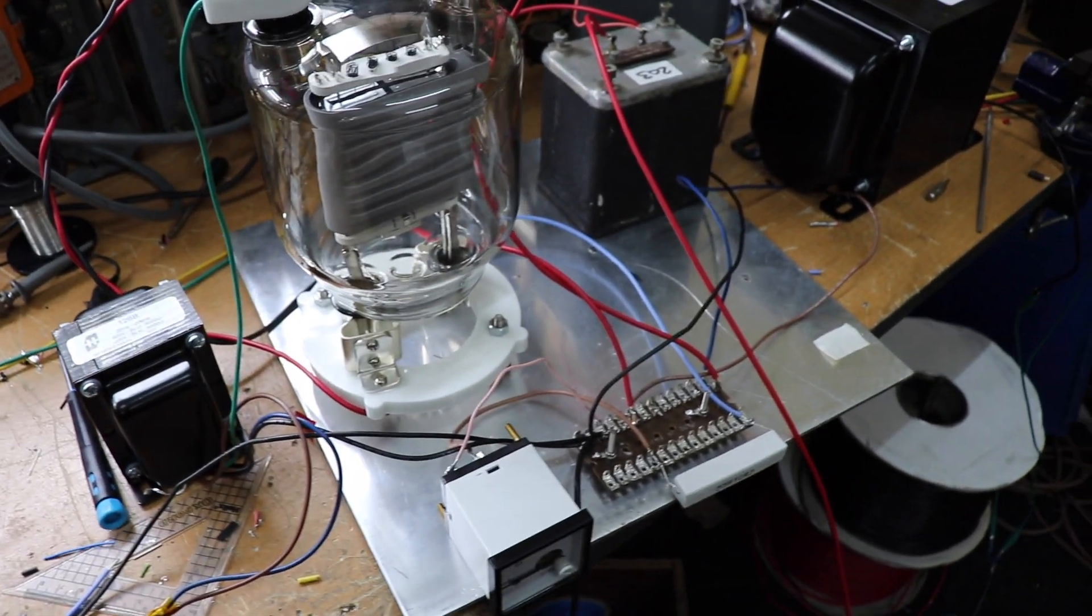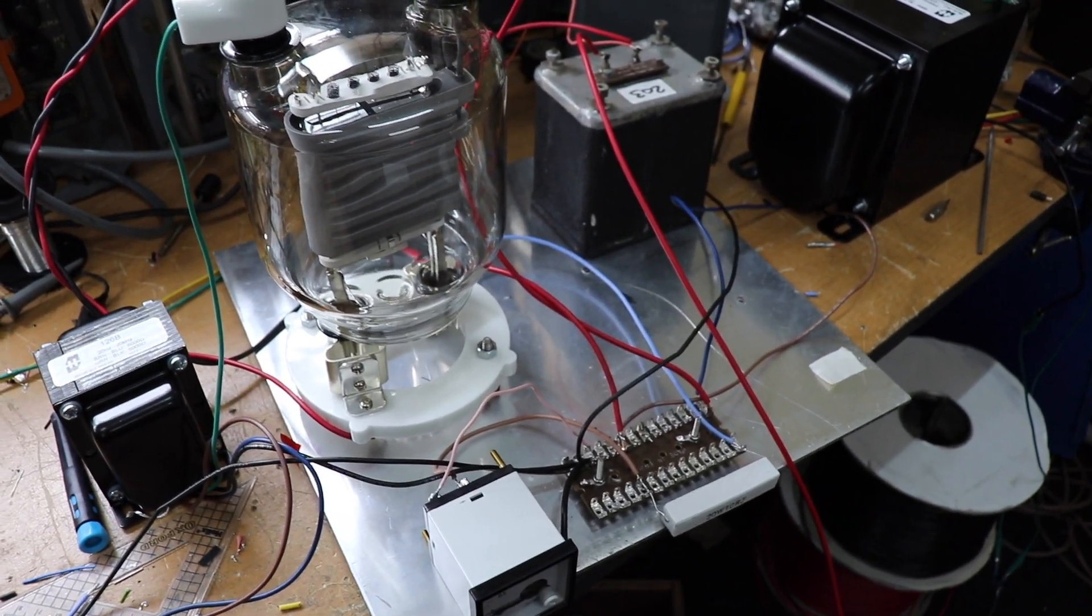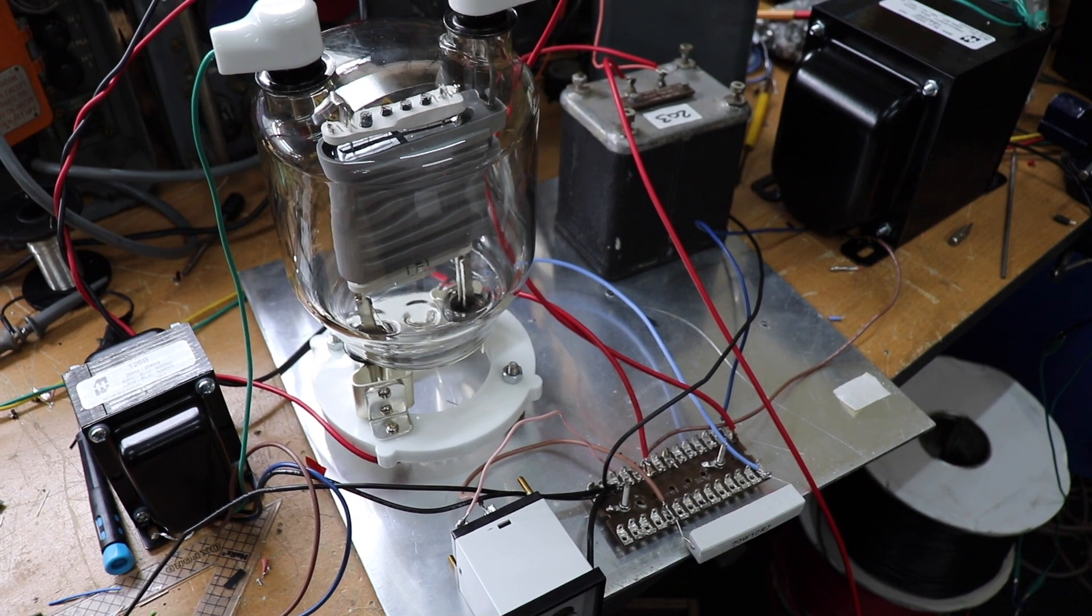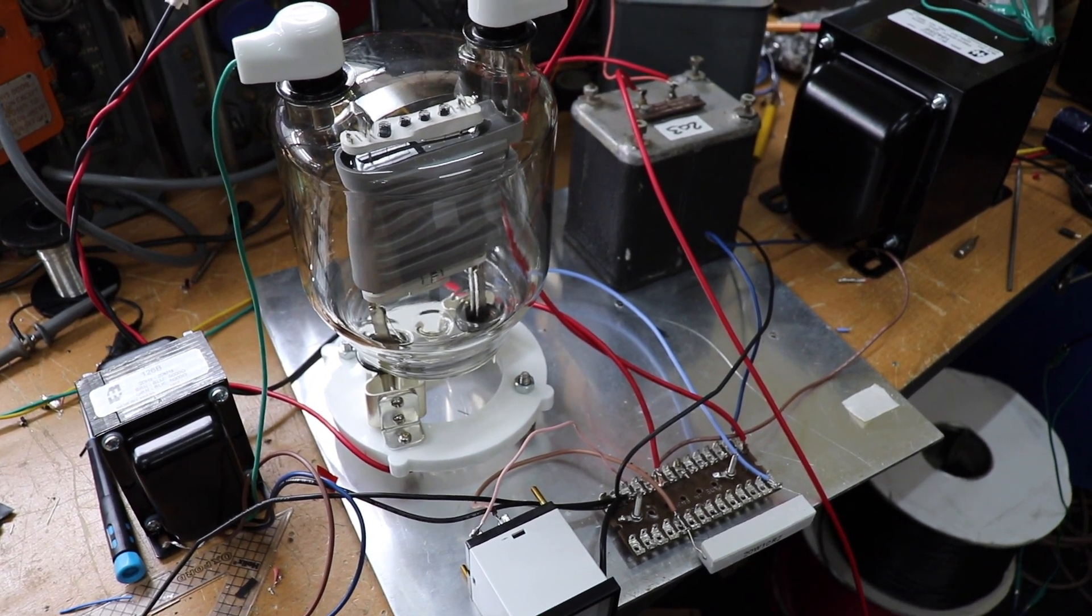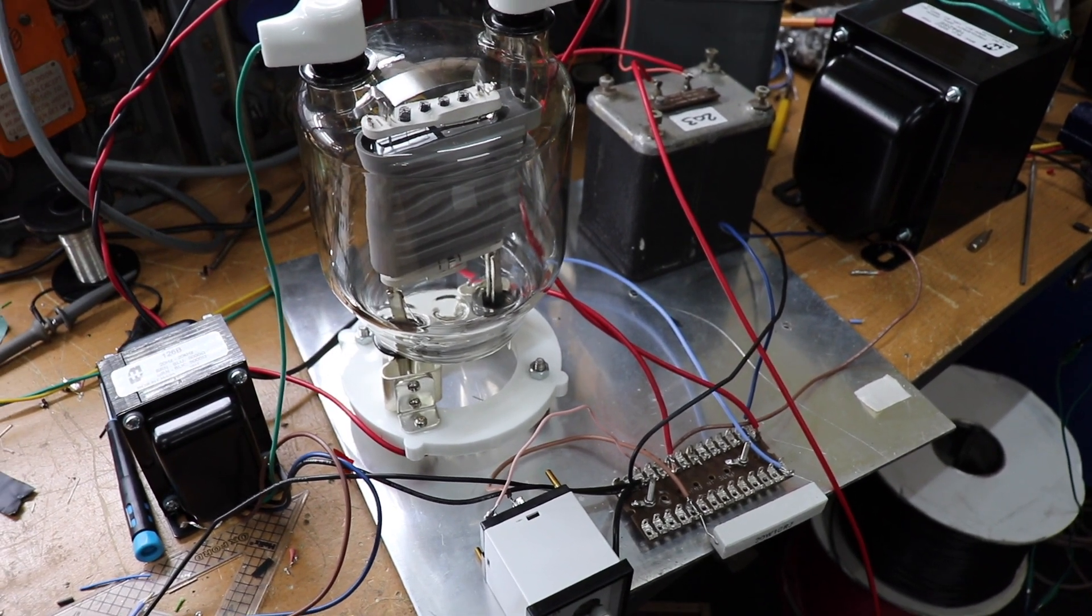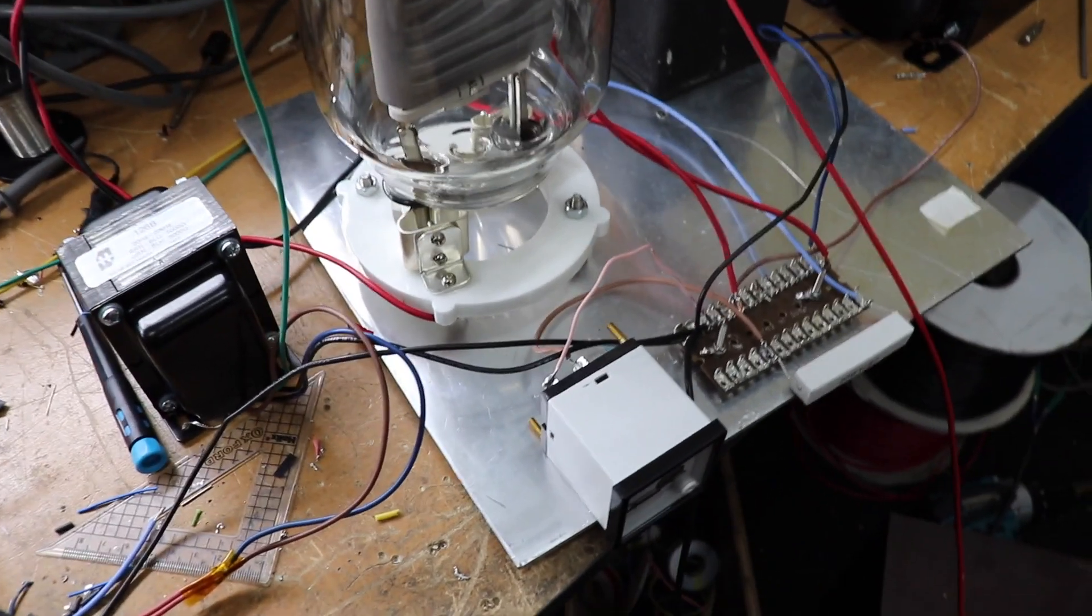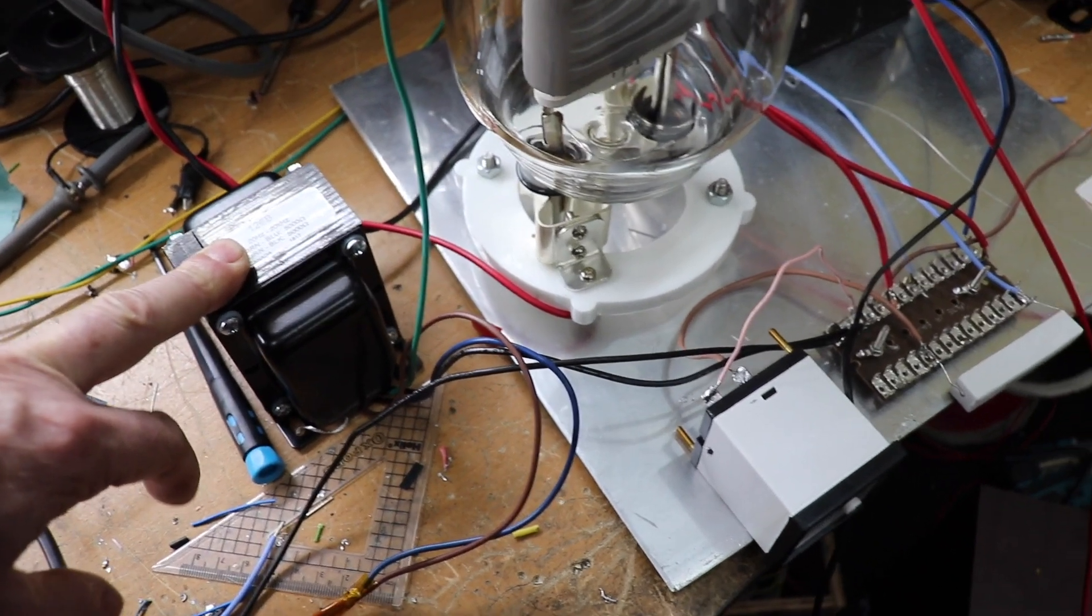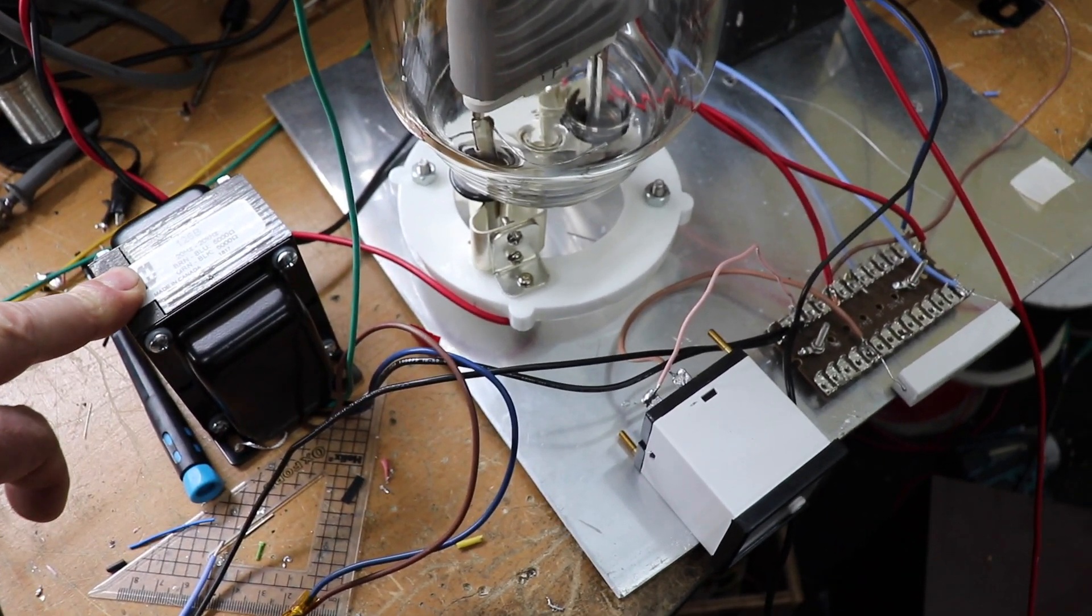And then the 833A, so this valve at the moment, I mean this thing will take up to 3kV but if we run it at 3kV we have to bias the tube so it makes the whole thing a bit more complicated. At the moment because we're using it directly from this interstage transformer we are running it at zero bias.